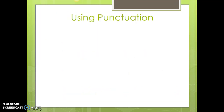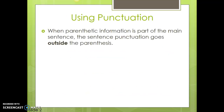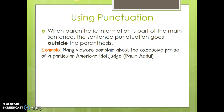When we use parentheses, we have punctuation in the sentence, and sometimes there are a lot of questions about where the punctuation goes. Here are some rules: when parenthetic information is part of the main sentence, the sentence punctuation goes outside the parentheses. Parenthetic information is the information that is inside the parentheses. Here's an example: 'Many viewers complain about the excessive praise of a particular American Idol judge (Paula Abdul).' The information 'Paula Abdul' is part of the main sentence, so the punctuation goes outside the parentheses.